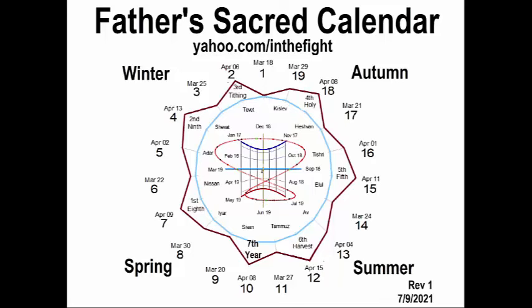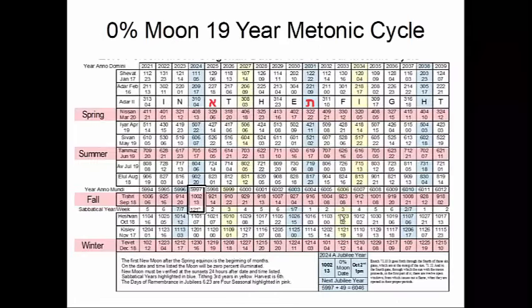A zero-percent moon means there's no sighting — you cannot see anything. That's absolutely nothing. This is what man will actually call the new moon, but anyway let's go to the next slide and come back to this one.